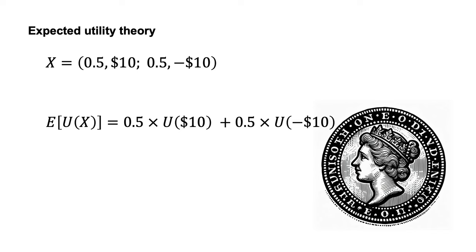For the coin toss that delivers a win or loss of $10, we would write that the expected utility of that coin toss is 0.5 times the utility of $10 plus 0.5 times the utility of minus $10.